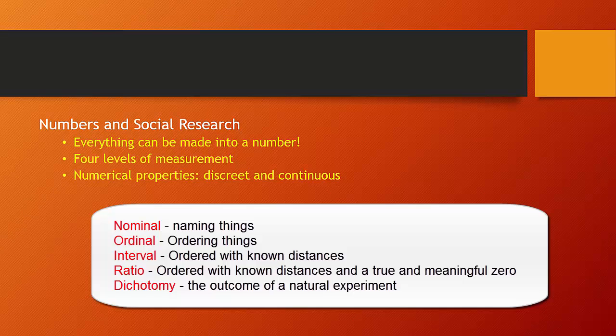We have the ratio level of measurement, which is like an interval level, but it includes a true or absolute zero point. And we have a special level of measurement called dichotomies, and we can make anything into a dichotomy.